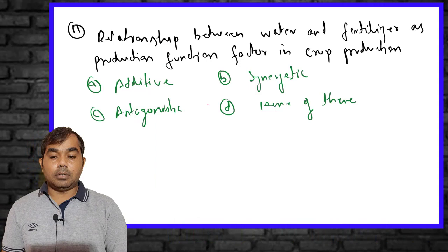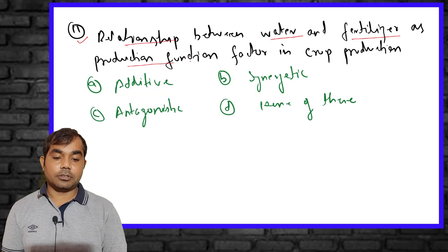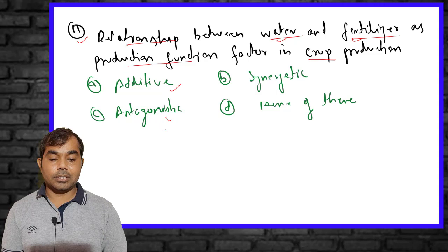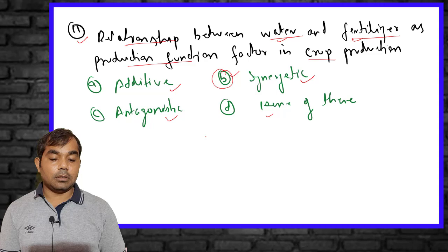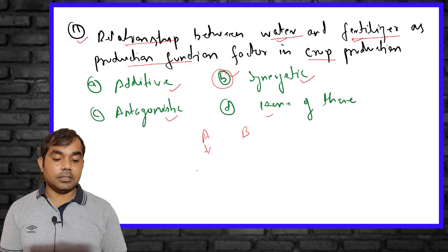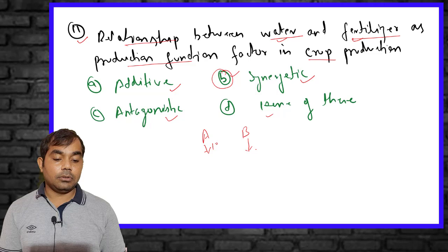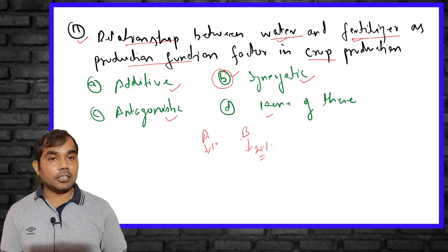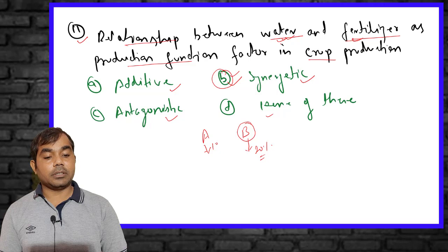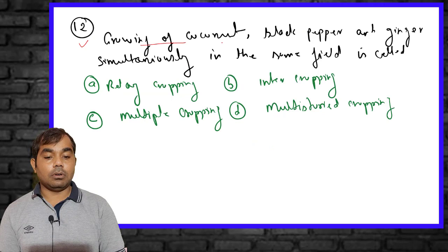The eleventh MCQ asks: what is the relationship between water and fertilizer as production function factors in crop production — additive, antagonistic, synergistic, or none? The right answer is synergistic. Synergistic means when one factor increases, the other factor's effectiveness increases disproportionately — for example, a 10% increase in one factor may cause a 20% increase in the effectiveness of the other. The relationship between fertilizer and water is synergistic.